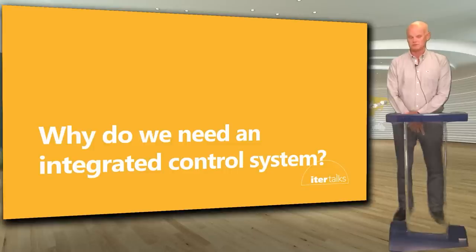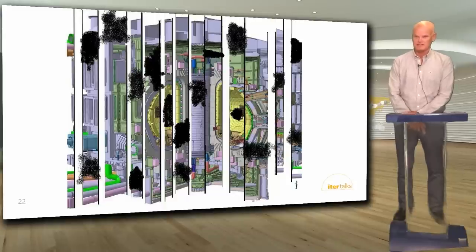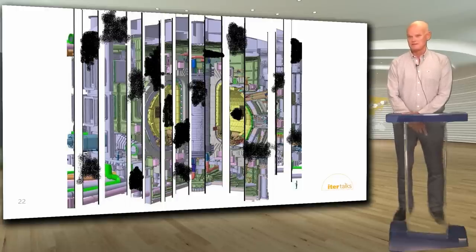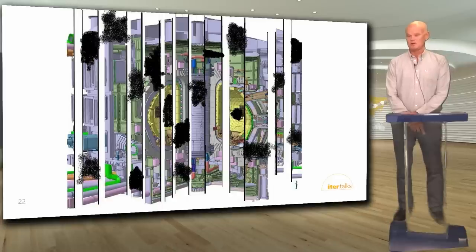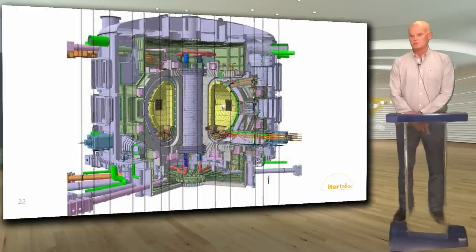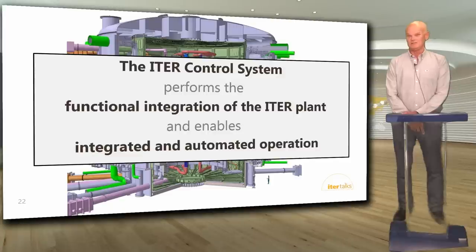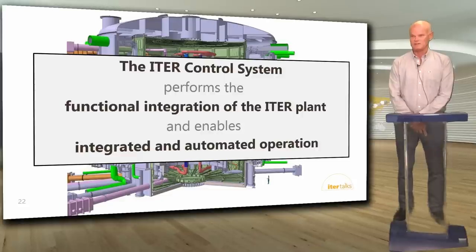So why do we need an integrated control system? Each system may work fine in isolation, but they don't work together — there are interface problems and missing functionality to achieve integrated operation. The role of the control system is to fix this. The mission statement in one sentence: the ITER control system performs the functional integration of the ITER plant and enables integrated and automated operation. The key word is integration.